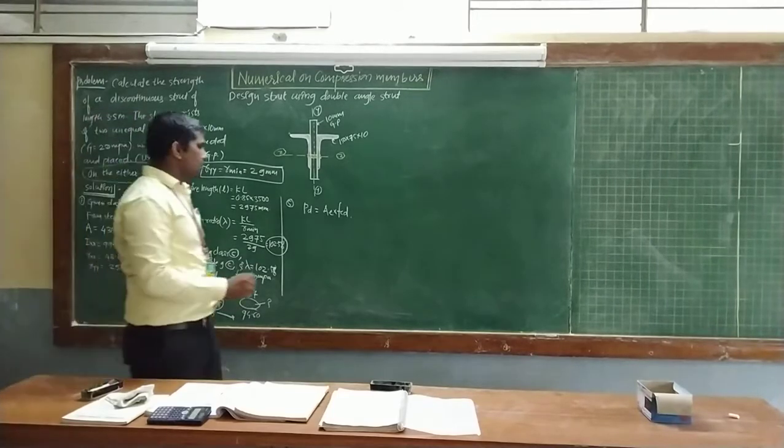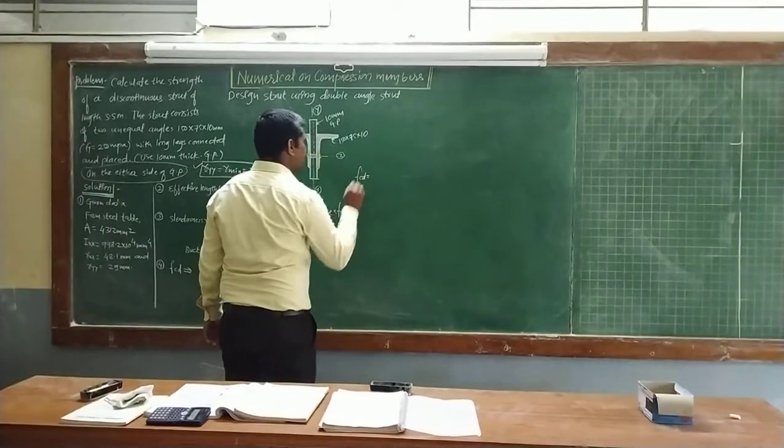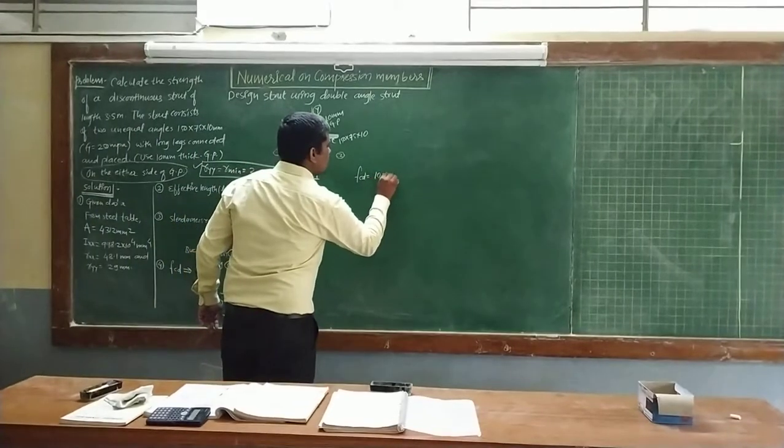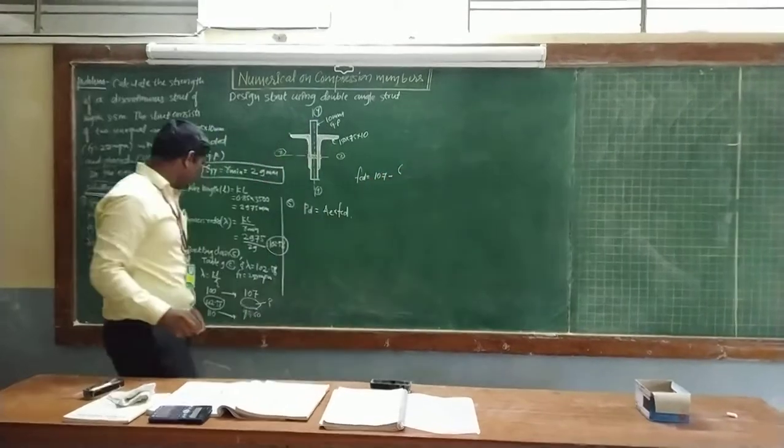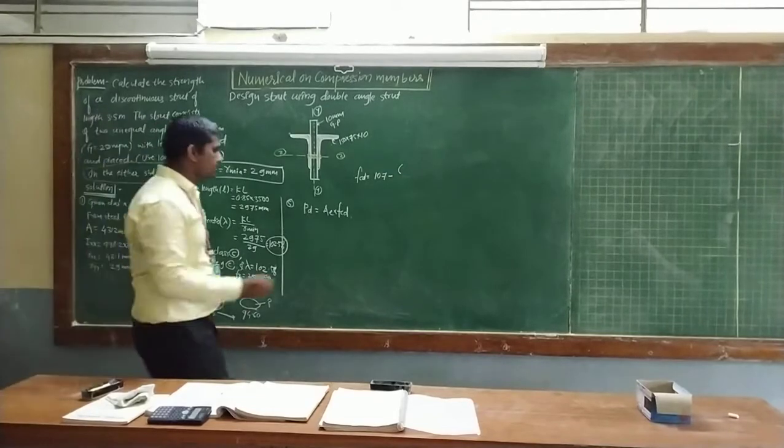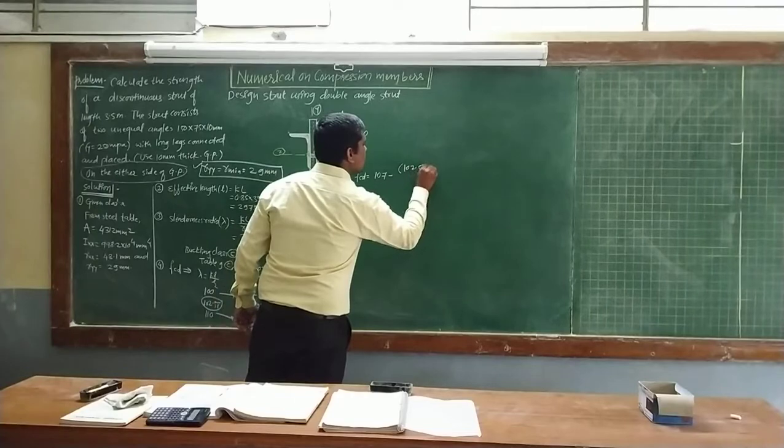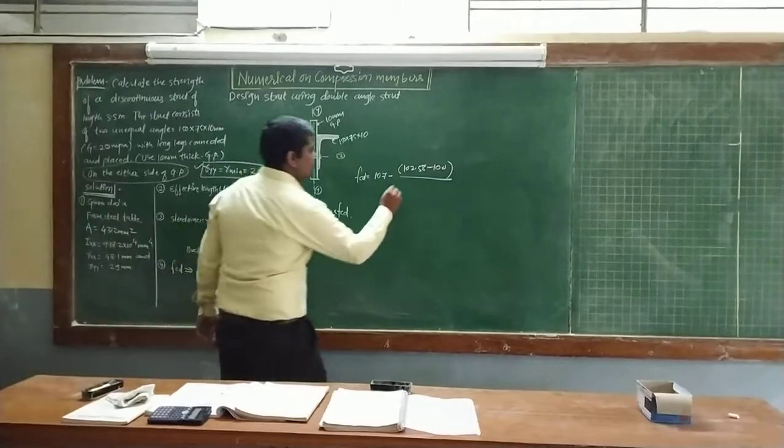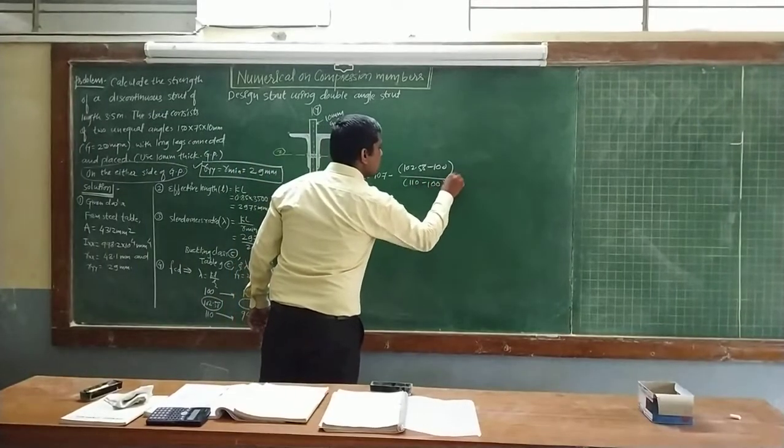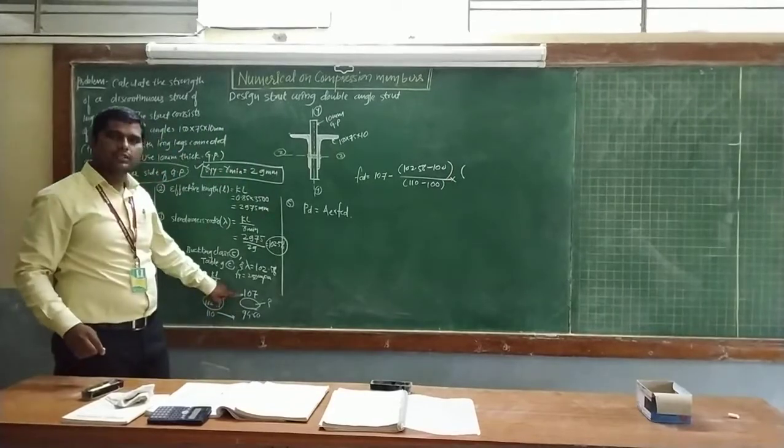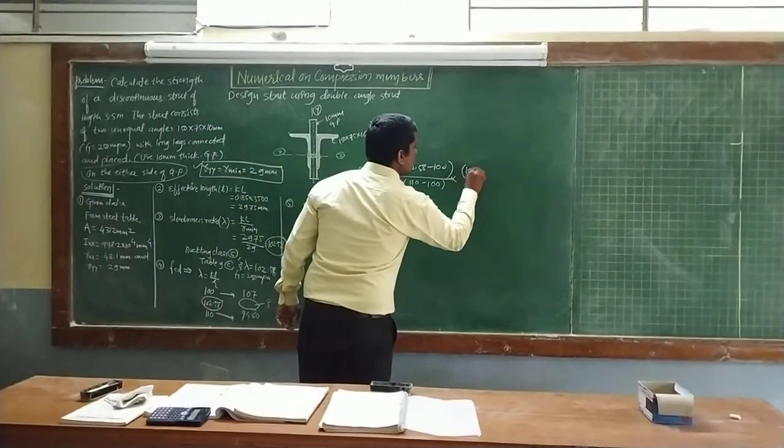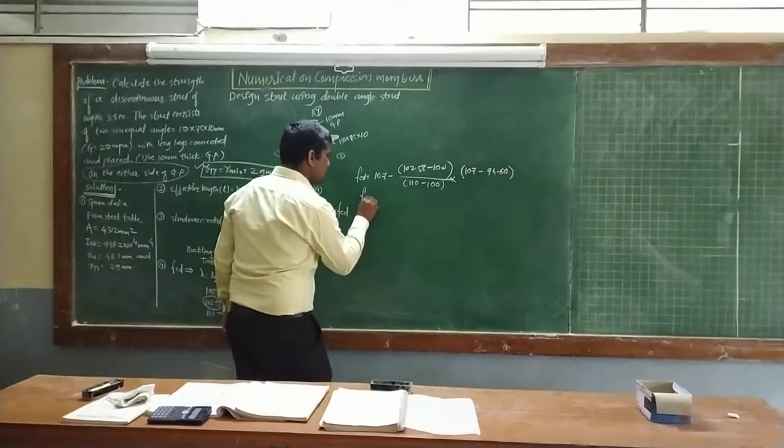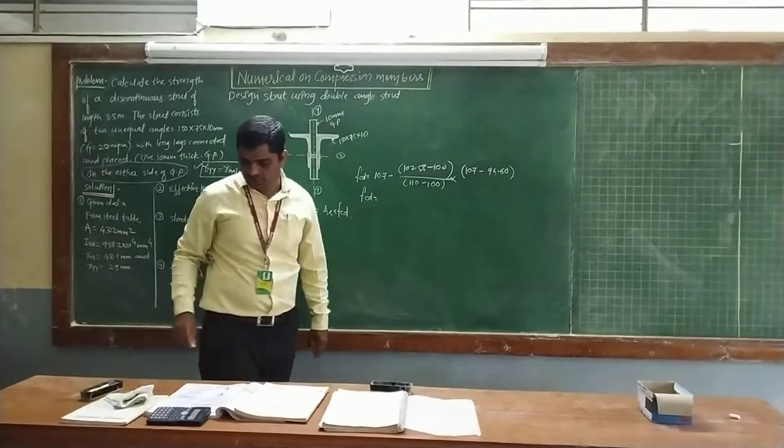So FCD is equal to 107 minus (102.58 minus 100) divided by (110 minus 100) times (107 minus 94.60). We make the calculations for the design compressive stress, that is the FCD value.